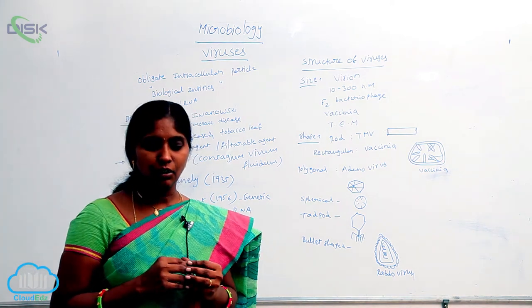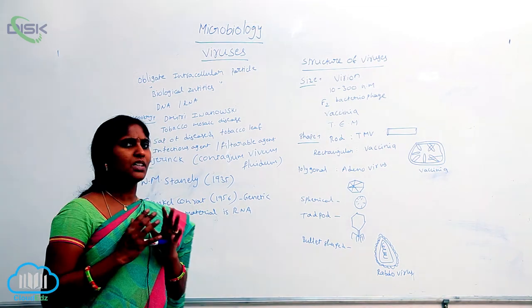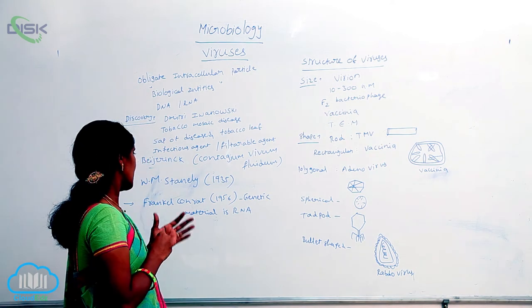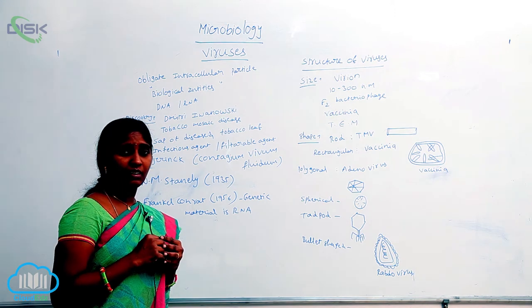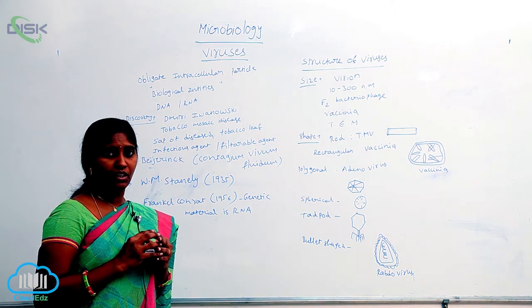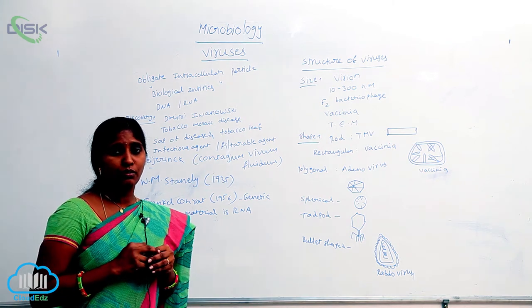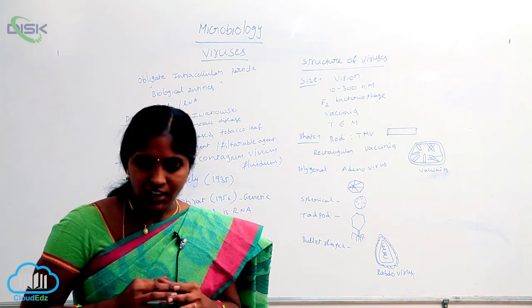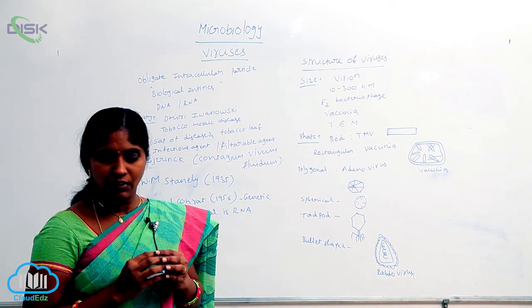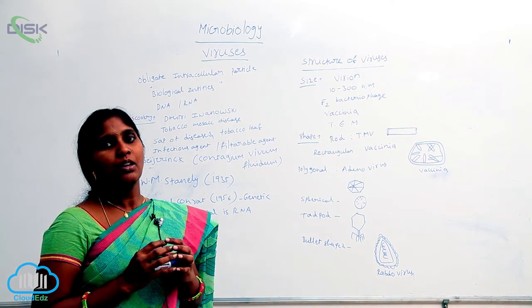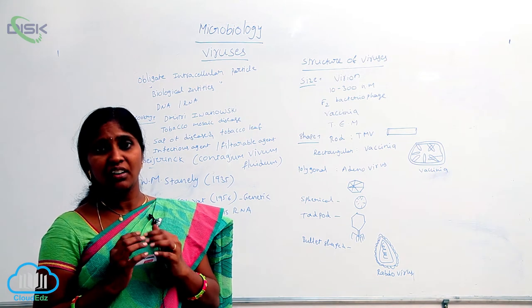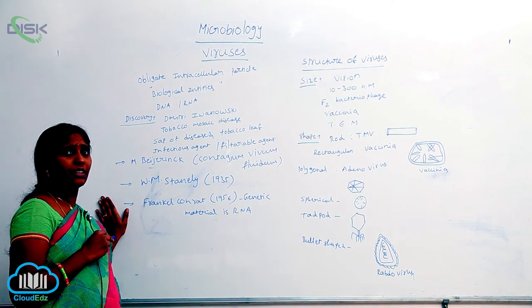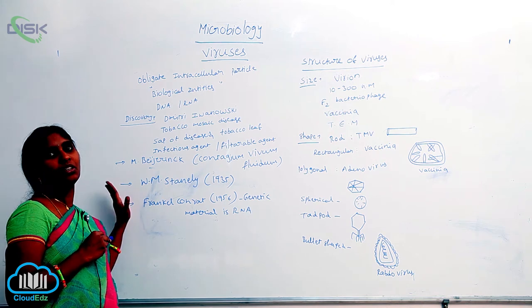Later, Frankel-Conrat confirmed the genetic material inside the virus. He stated that the virus is rich in RNA — the virus consists of nucleic acid, that is RNA. X-ray crystallography and ultra-centrifugation techniques were utilized for determination of the genetic material of tobacco mosaic virus as RNA.